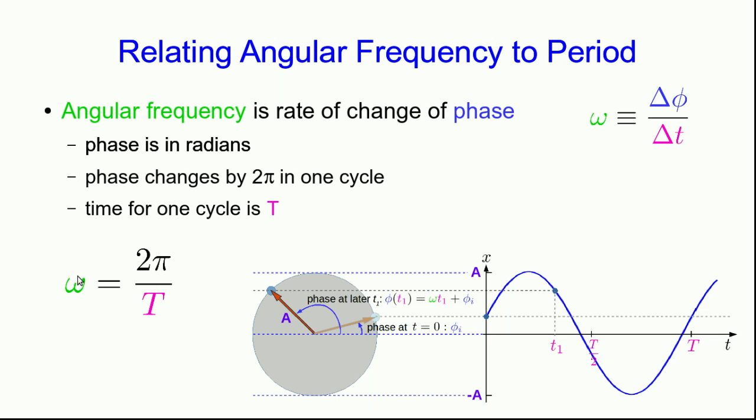There we have it. We have a relationship between angular frequency and period. Similarly, since frequency is one over the period, we can see that angular frequency is related to frequency just by a factor of two pi.